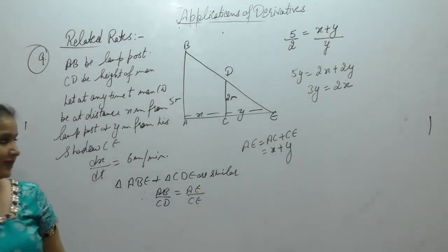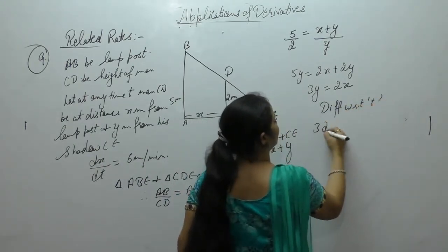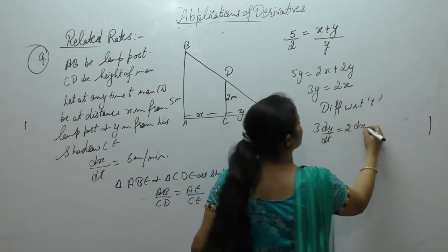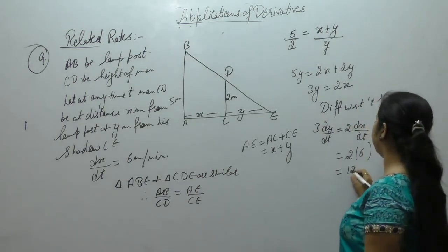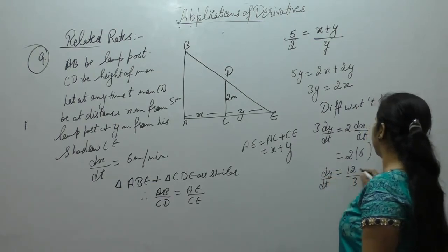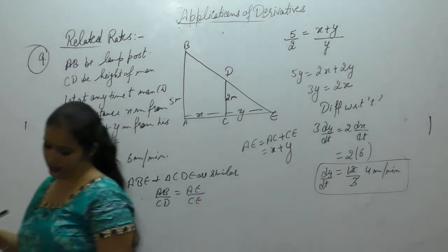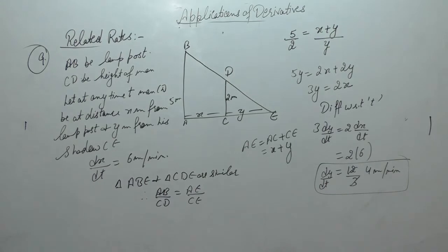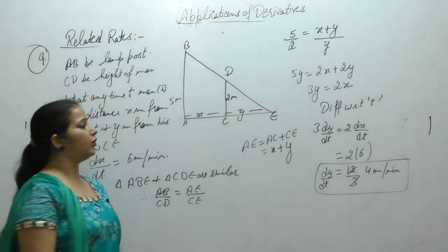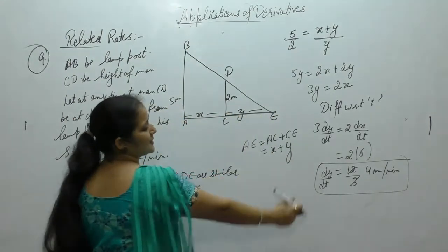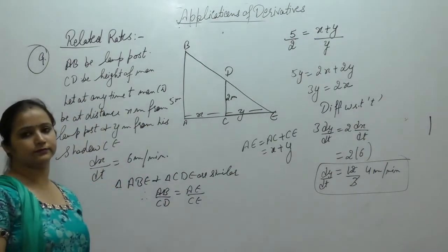Now differentiate with respect to t: 3 dy upon dt equals 2 dx upon dt. dx upon dt is 6 meter per minute. So dy upon dt equals 12 by 3 that is 4 meter per minute. Therefore the shadow increases at rate of 4 meter per minute.